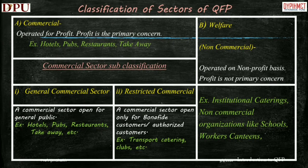In this table, we can see the classification of sectors of quantity food production. Quantity food production sectors are classified into two major sectors: one is commercial and the other is welfare. The commercial sector, as the name suggests, operates for commercial purpose — that is, for profit. While the welfare sector operates on a no profit, no loss basis, or on break-even point — for example, catering in orphanages, prisons, and so on.